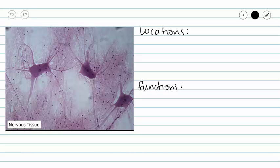For locations of nervous tissue, we have our brain and our spinal cord. Those, I hope, are obvious to you. But we also have some nervous tissue in our peripheral and cranial nerves as well as in ganglia.